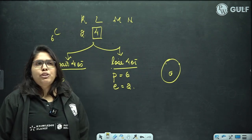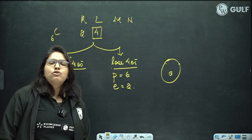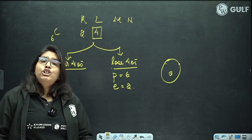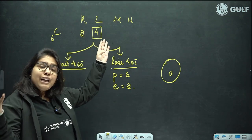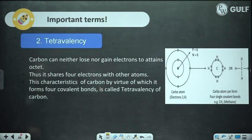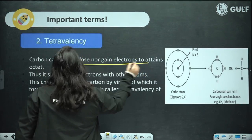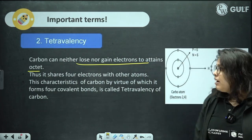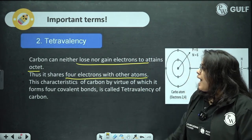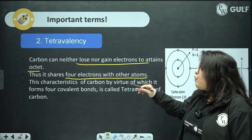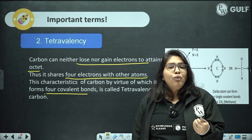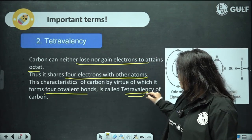That is when Lewis's approach comes into picture. Carbon has 4 electrons — it shares all 4 electrons with other atoms. When sharing of 4 electrons takes place, it already has 4 and needs another 4 shared from the other element — 4 plus 4 gives 8, fulfilling the octet. Carbon can neither lose nor gain electrons to attain an octet. Thus it shares all 4 electrons, and this characteristic by virtue of which it forms 4 covalent bonds is known as the tetravalency of carbon.